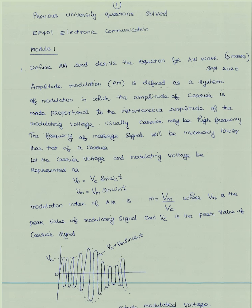Amplitude modulation is defined as a system of modulation in which the amplitude of the carrier is made proportional to the instantaneous amplitude of the modulating voltage. The carrier signal is high frequency and the message signal is low frequency. Let the carrier voltage be Vc = Vc sin(ωc·t) and the modulating voltage be Vm = Vm sin(ωm·t).